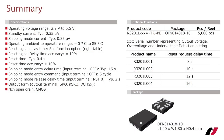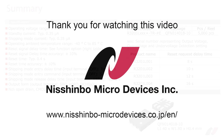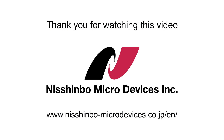The R3201 operates on a supply voltage from 2.2 to 5.5 V and operating temperature range is from minus 40 to 85 degrees Celsius. Current consumption of the R3201 is only 0.35 µA. The reset request delay time is internally set and one can select from four different product versions. A small wafer level chip scale package is used, occupying only 1.4 by 1.8 millimeters of board space with a height of 0.4 millimeters.